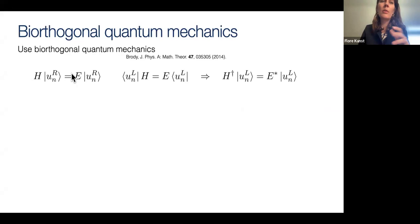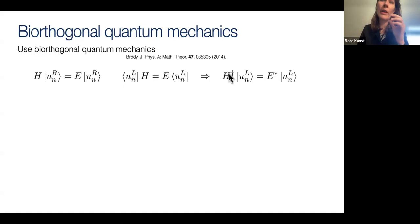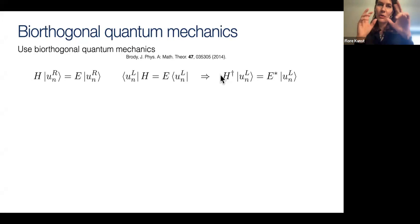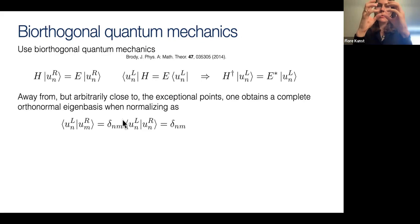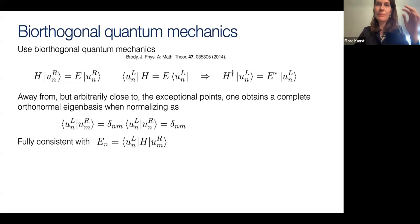You can remedy this situation by taking a bi-orthogonal set as long as alpha is non-zero — taking the inner product between the left and right eigenvectors and normalizing. This is known as bi-orthogonal quantum mechanics. More formally: your Hamiltonian has a right eigenstate with energy E, and a left eigenstate with energy E. For a non-Hermitian system, the left eigenstate of H is the right eigenstate of H-dagger with E-star. These are not orthogonal, but away from exceptional points you can obtain a complete orthonormal eigenbasis via bi-orthogonal normalization.